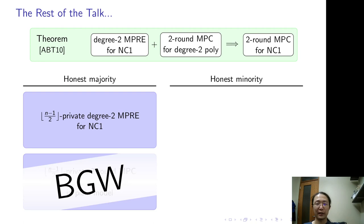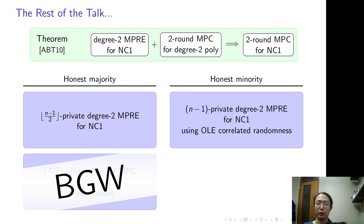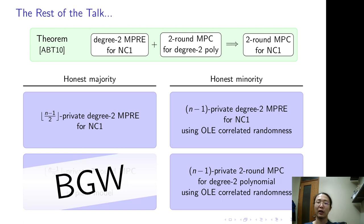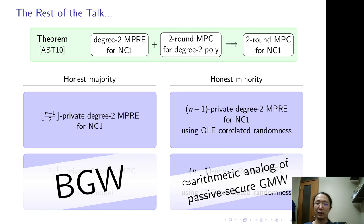In the honest minority setting, we construct degree 2 MPRE that tolerates any number of corruption using OLE-correlated randomness. And we construct 2-round MPC computing degree 2, tolerates any corruption in OLE-correlated randomness model. And this is basically the arithmetic analog of GMW.